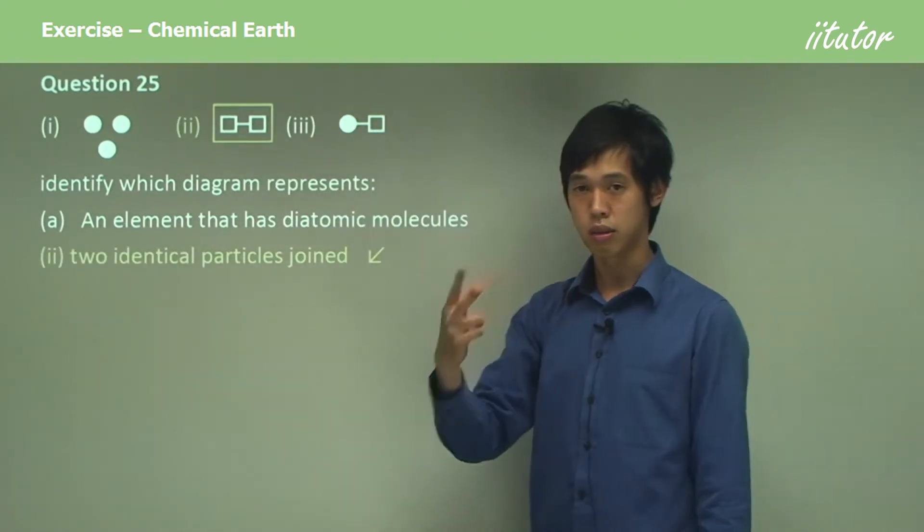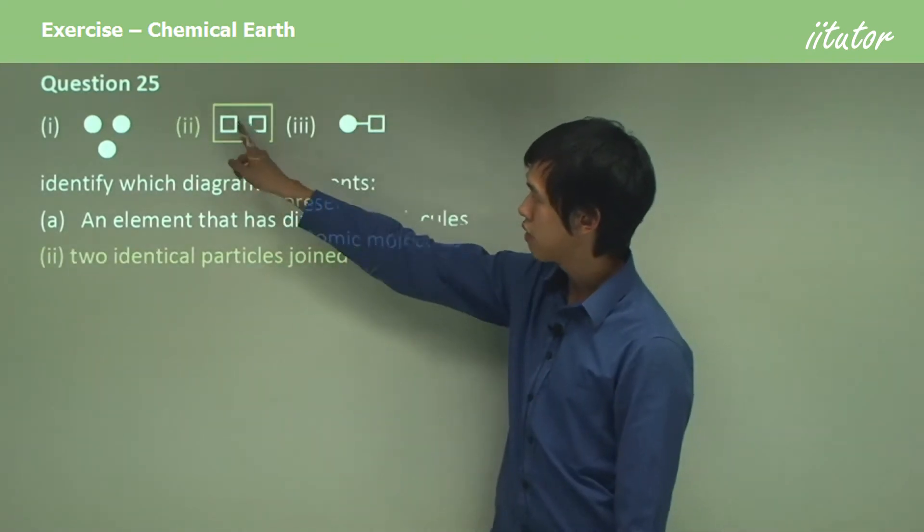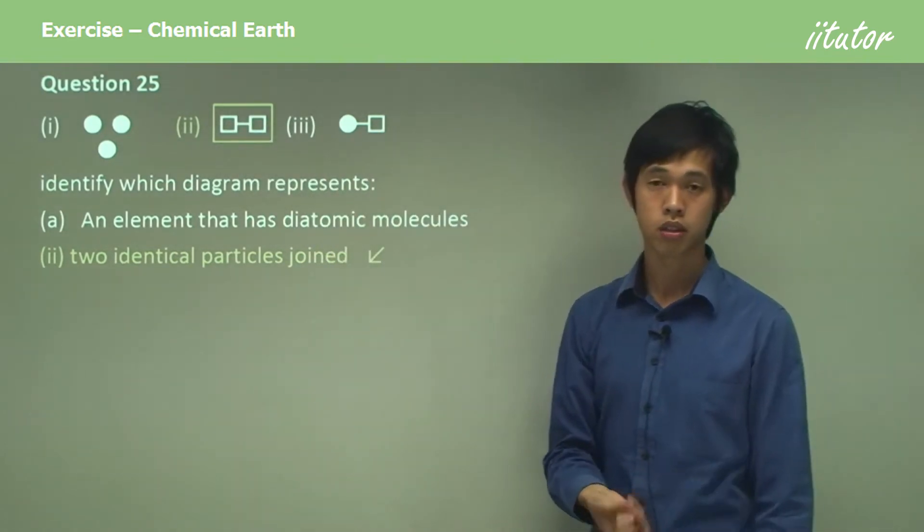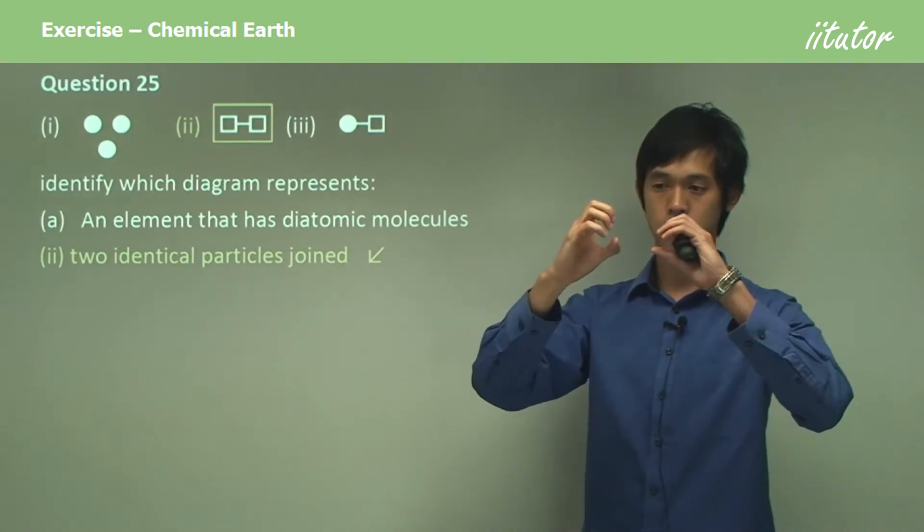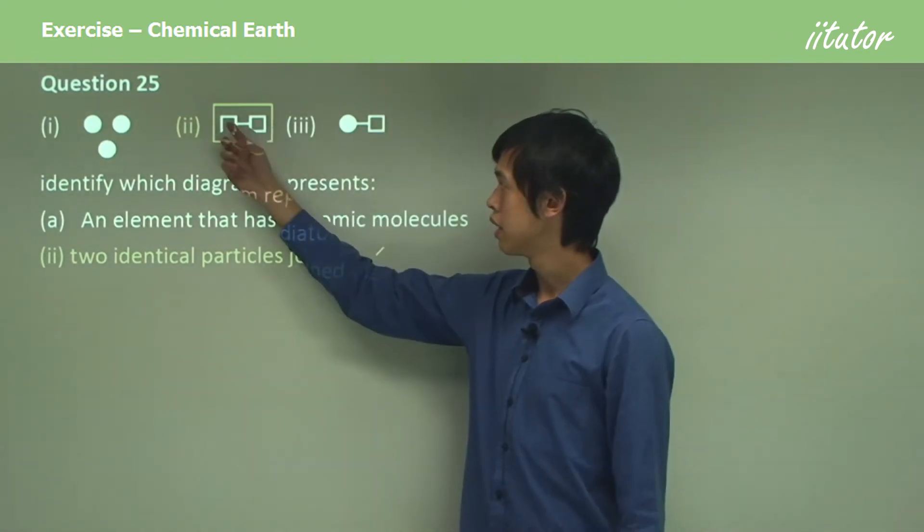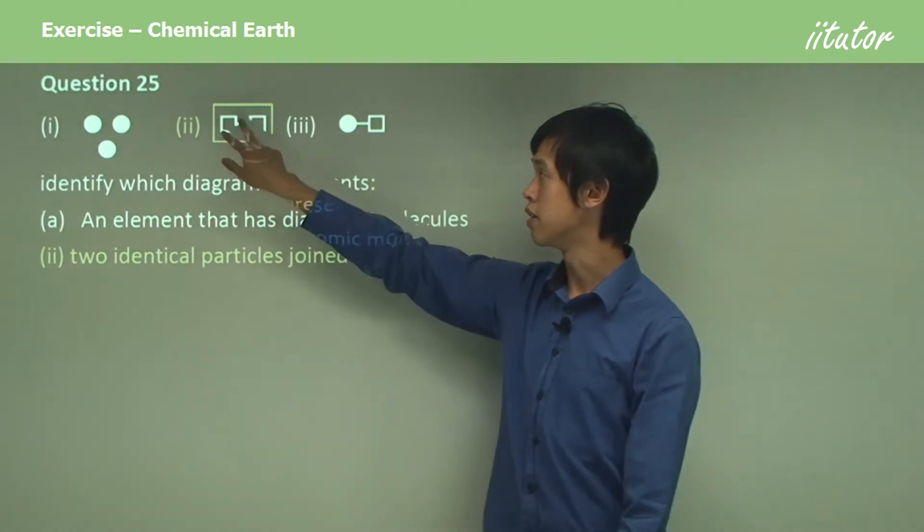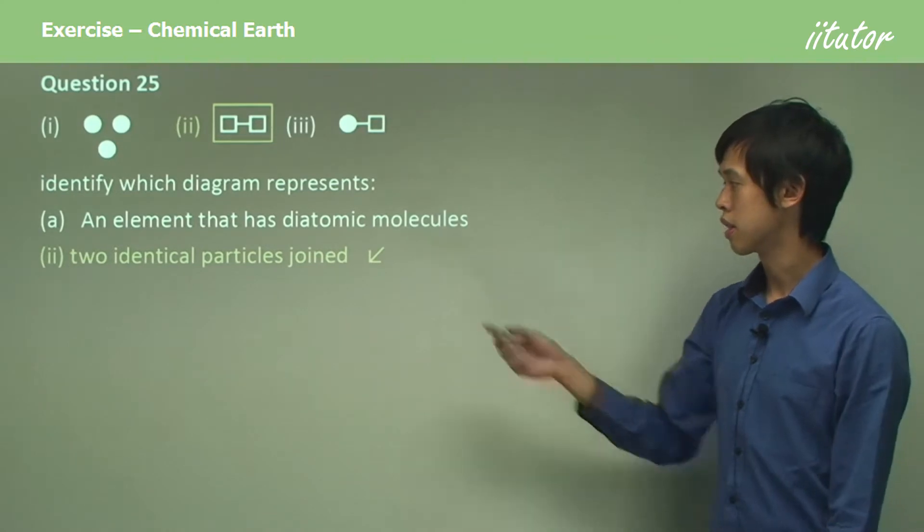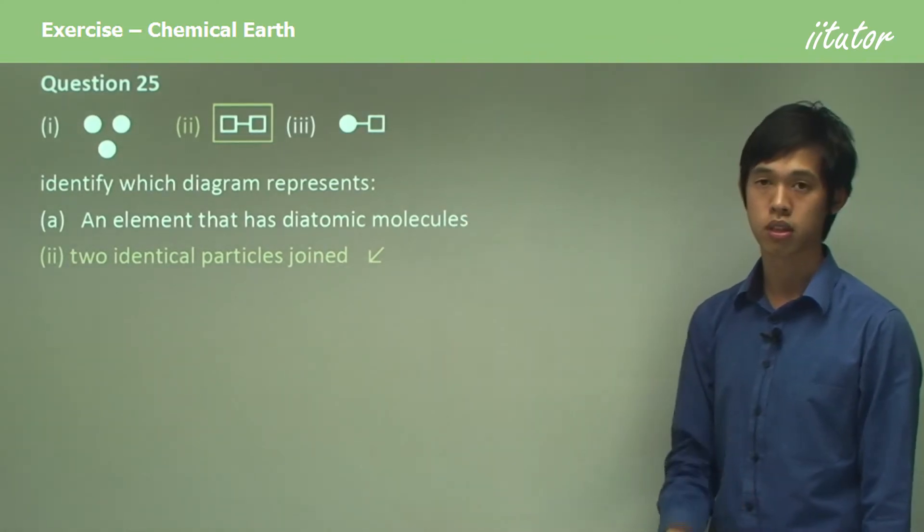It's number two. Because you can see that each of the components of this molecule are exactly the same. So it must be an element. It's not a compound because the two parts are the same atom. So this is an element, and it's diatomic because there are two atoms connected in one molecule. So that's a diatomic molecule.